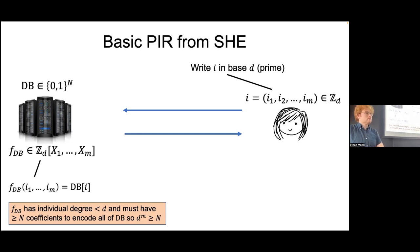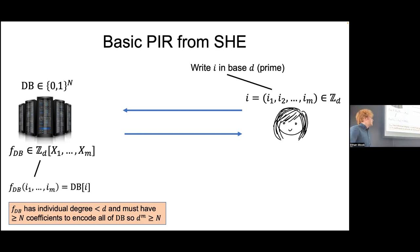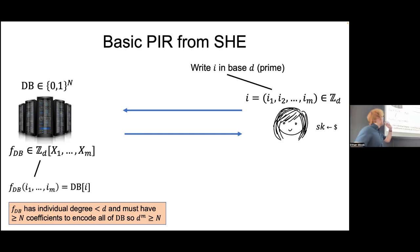There is a question about individual degree. Individual degree means the degree in each variable. The total degree is D times M, and the polynomial has at most N coefficients.